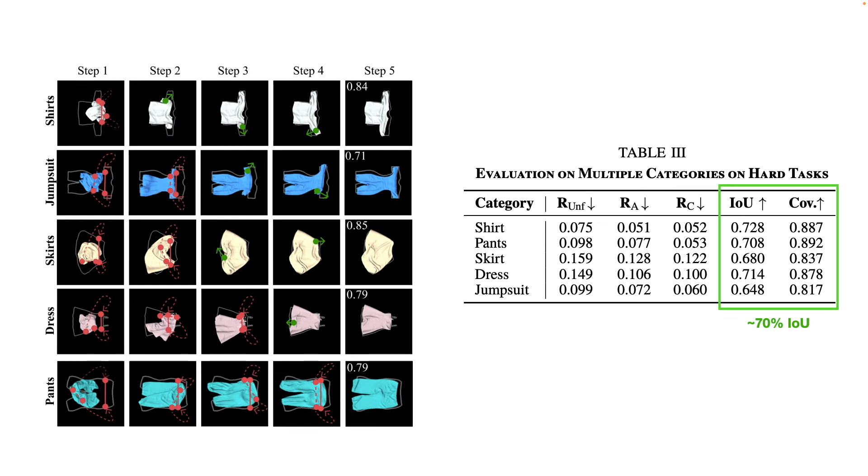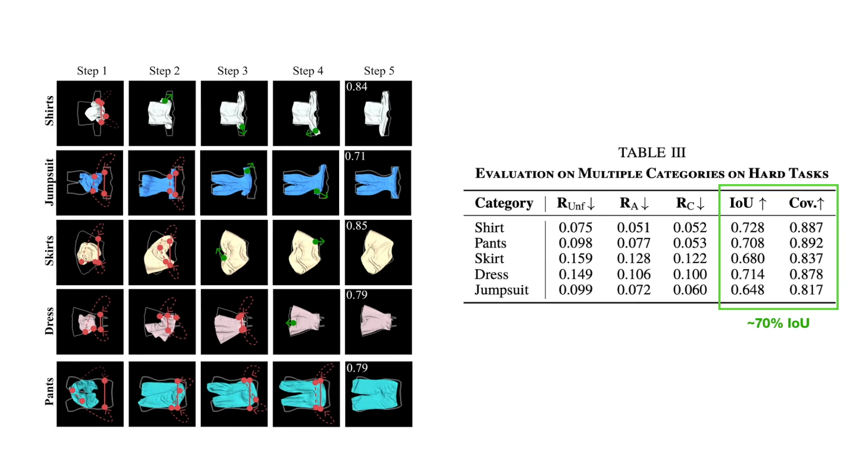Quantitatively, we reach about 70% IOU for each category, which we have observed to qualitatively indicate a successful episode. Now let's see how canonicalized alignment can be useful for downstream tasks.